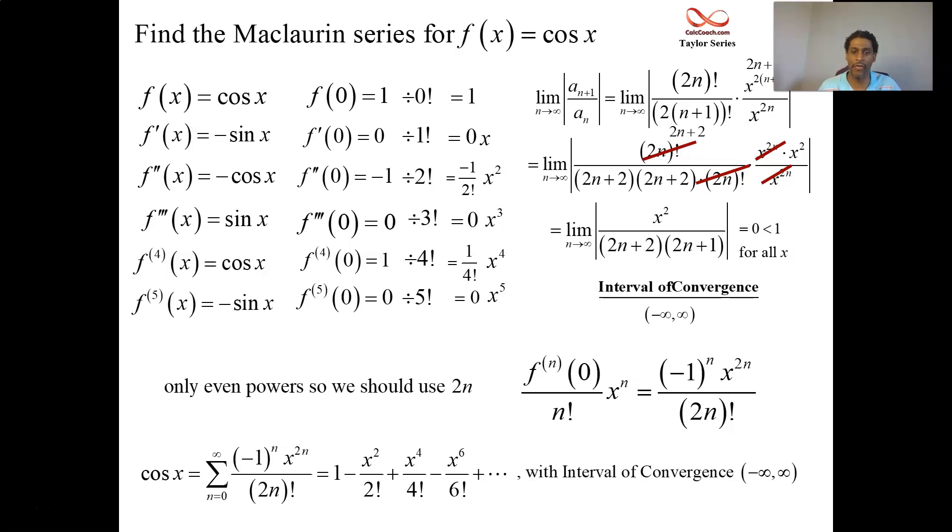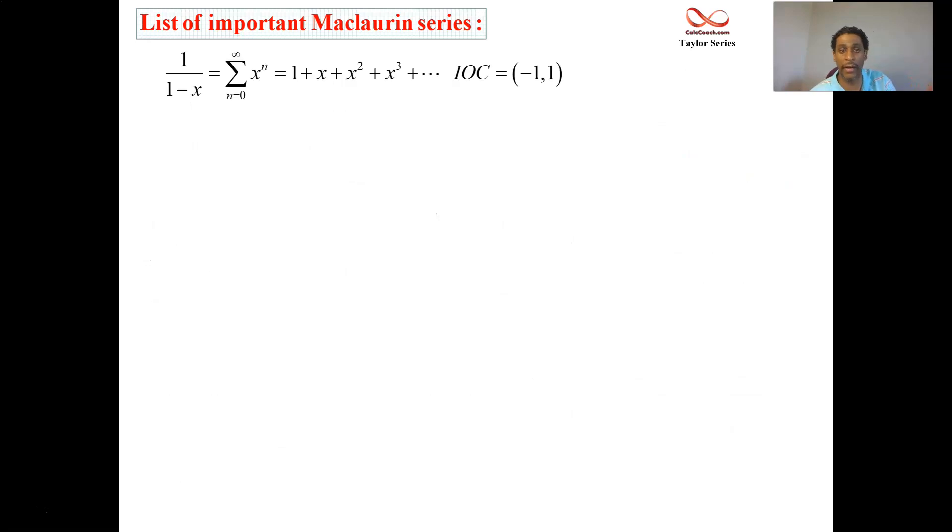The interval of convergence is the entire real line. And so we have the interval of convergence being the entire real line. And this represents then the seventh known function that we basically have in our library that we know the power series representation for. These are all Maclaurin series. We didn't call them Maclaurin series back before when we were doing the geometric series, but it's centered at 0. It's a Maclaurin series.